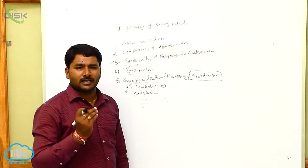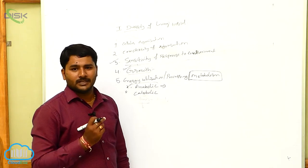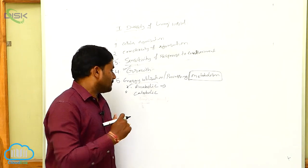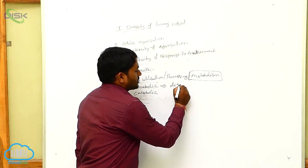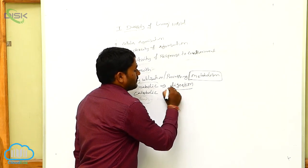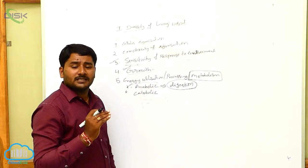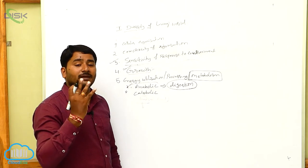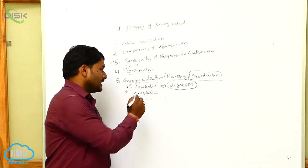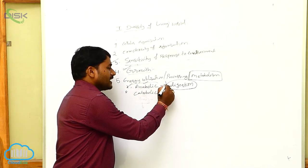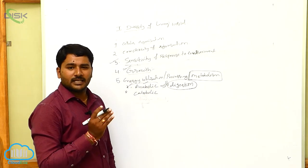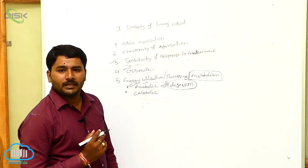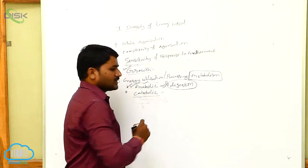In the anabolic reaction, energy is stored and conserved. The best example of an anabolic reaction is digestion. What happens in digestion? At the end of the digestion process, we get some energy substances. So in anabolic reactions, energy is stored and conserved — that is called an anabolic reaction.